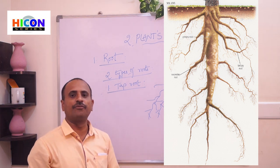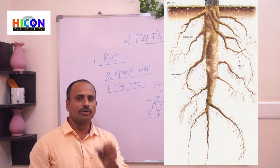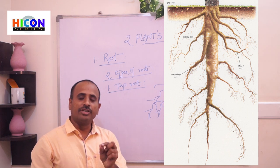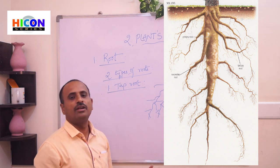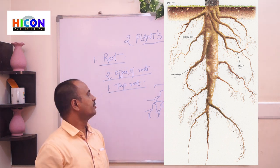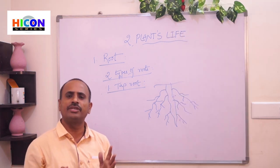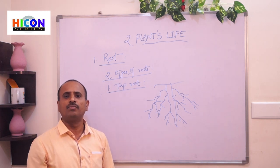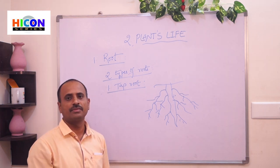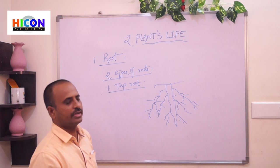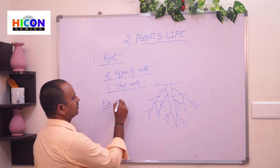This type of root is called tap root. If you observe the tap root carefully, there is a main root in the middle, and some thin roots grow from it. This type is called tap root. Most of the plants we observe in daily life — mango trees, banyan trees, neem trees, hibiscus, mustard — have a tap root system.